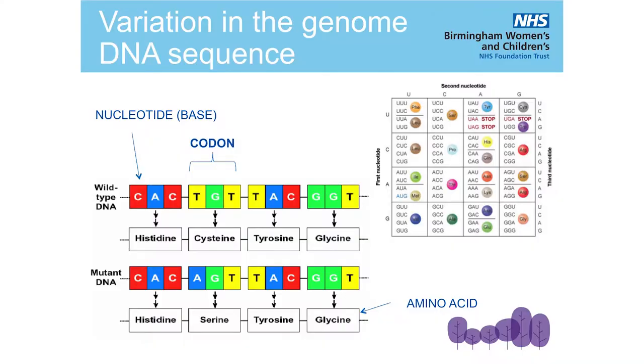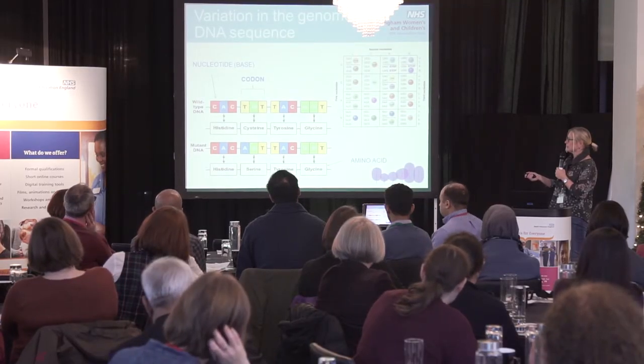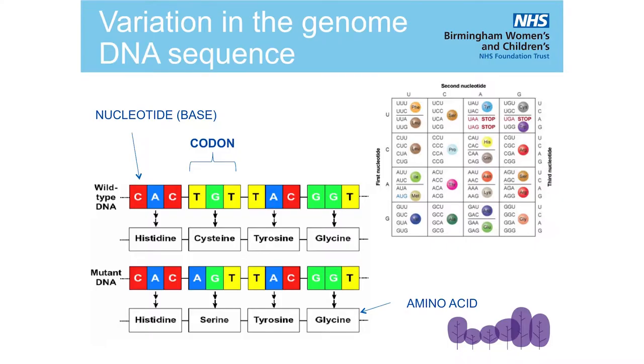Moving on from gross chromosomal aberrations and delving down into the actual DNA sequence itself: triplets of bases, or nucleotides, form what's known as a codon, and each codon codes for a different amino acid — it's the sequence of amino acids that makes up a protein. A very simple example is a substitution of thymine for adenine. This codon originally coded for cysteine, but now the sequence has changed from TGT to AGT, so the amino acid is now serine — a change in one single amino acid.